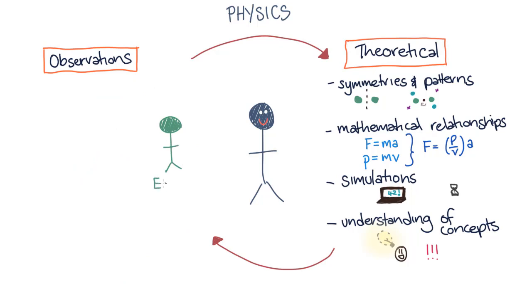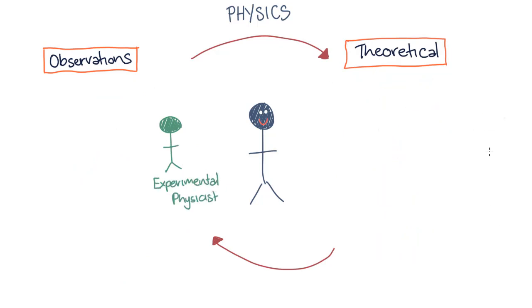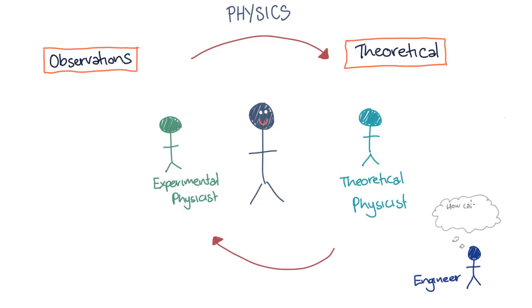Some physicists are more experimental and do more observation physics. And some physicists are more theoretical and look at more fundamental concepts. And then there are physicists who sit somewhere in the middle between observation and theory. There are also those people who choose to go on and do engineering instead and look at how they can apply physics in the real world.